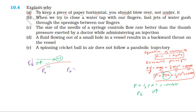Because the pressure above the paper is less than below, the higher pressure from below pushes the paper upward. This is why you should blow over, not under, a piece of paper to keep it horizontal.